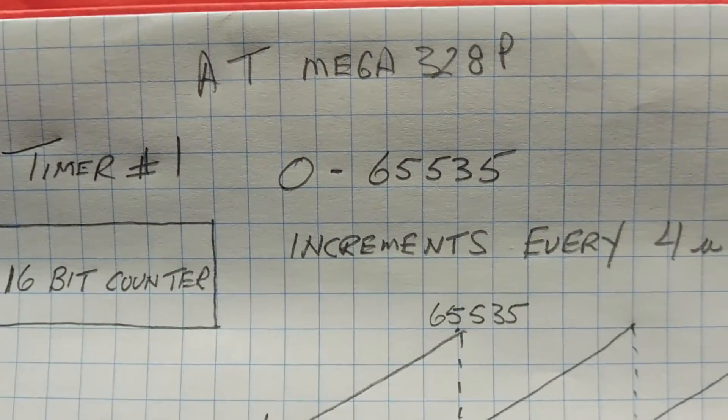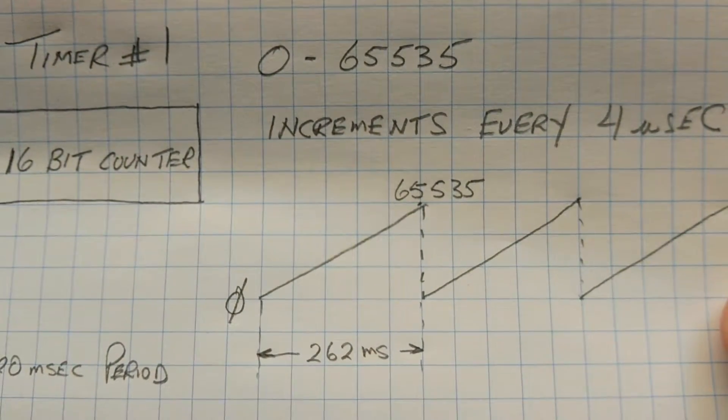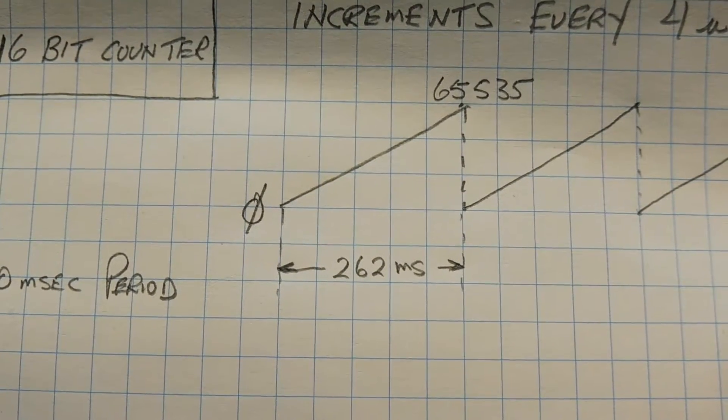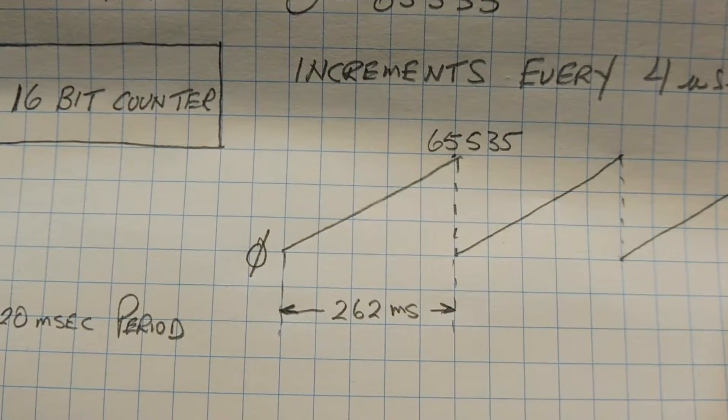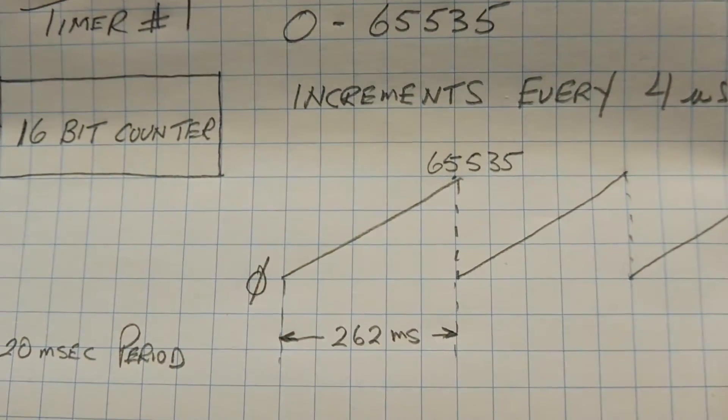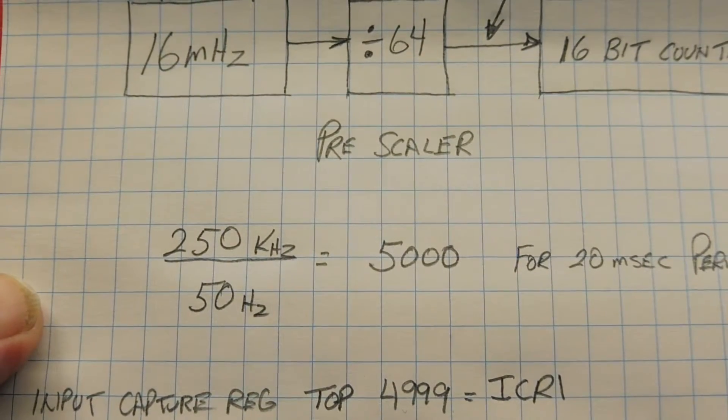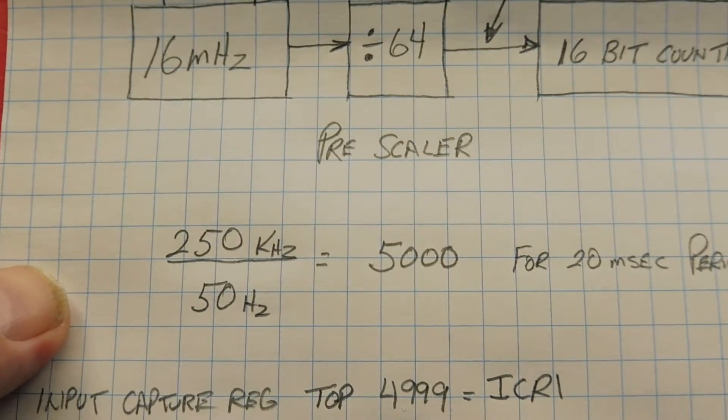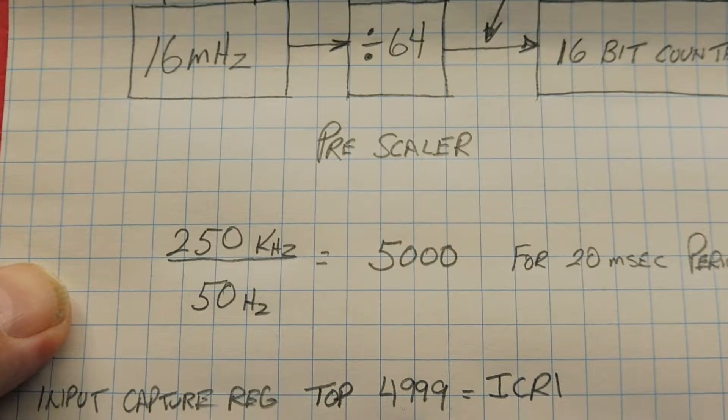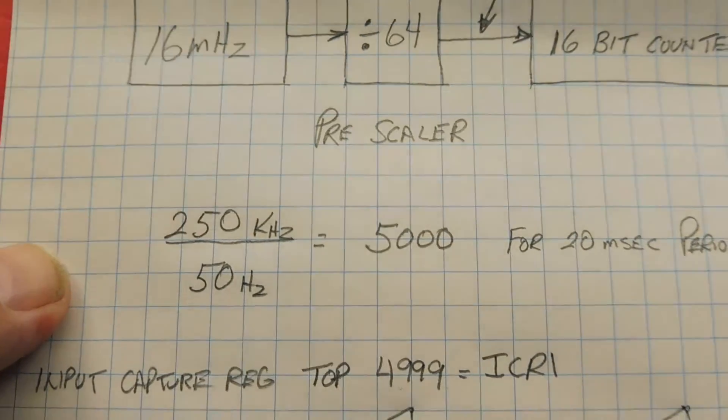So our counter will count from zero to 65,535, and it will roll over to zero and continue counting again. And that will give us a period of 262 milliseconds. Now we are looking for a period of 20 milliseconds for our servo motor, so we'll have to cut down that top value to a lower value. So if we divide 250 kilohertz divided by 50 hertz, which is a 20 millisecond period, we'll get a count of 5,000. So if we count up from zero to 5,000, we'll get a proper 20 millisecond period.